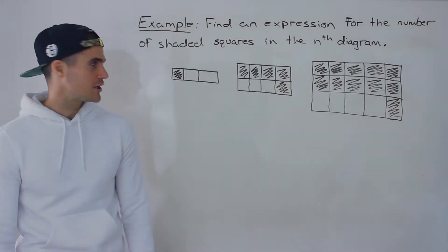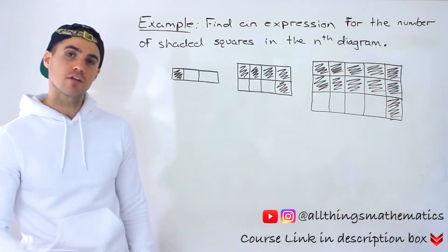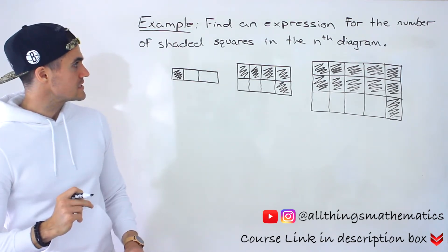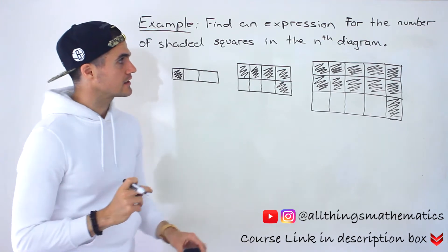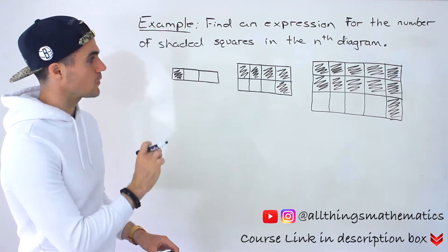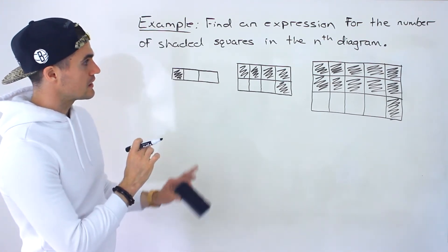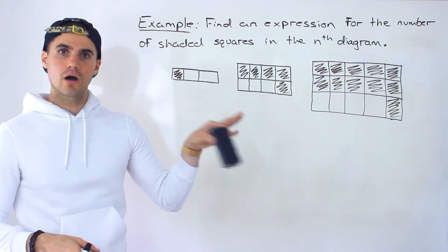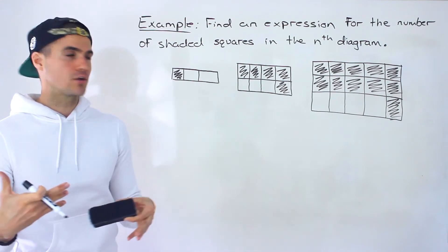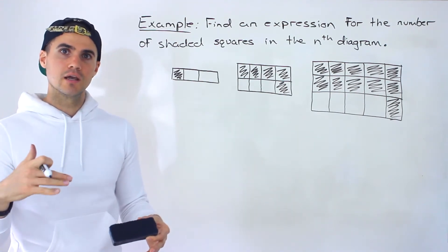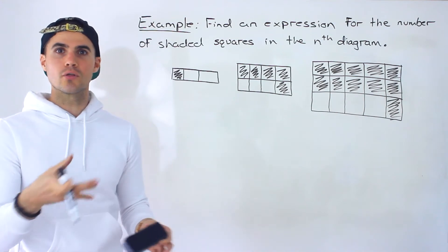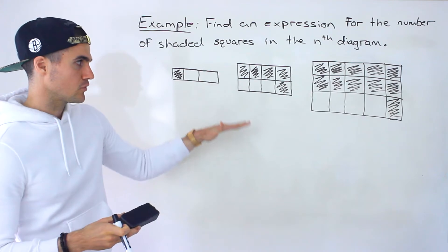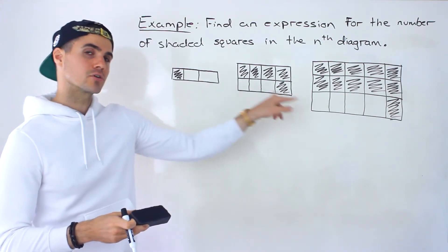Welcome back. We're moving on to another example, similar to the previous two videos, where we have to take this pattern and find an expression for the number of shaded squares in the nth diagram. I'm assuming you've watched the previous two videos. If you're watching on YouTube, the link in the description will take you to the website where the two prior similar examples are.